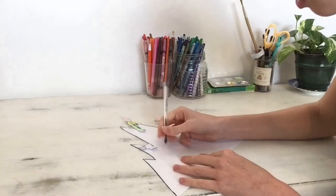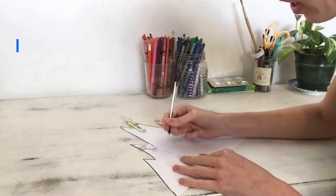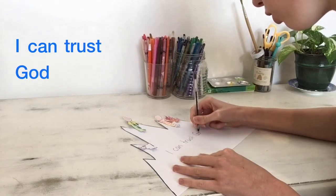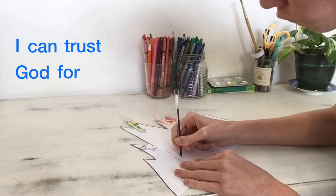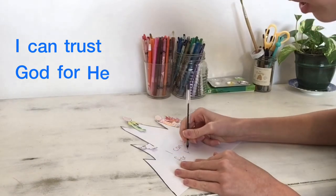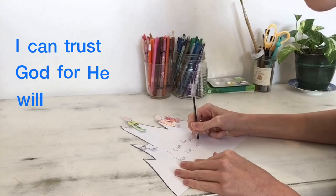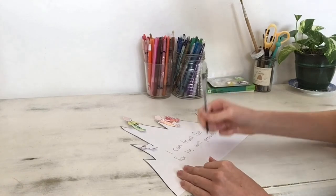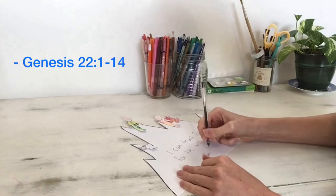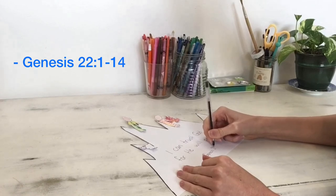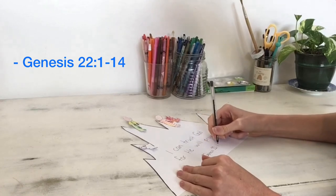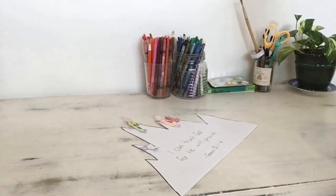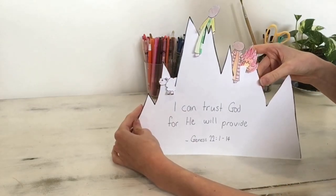So now we're going to write 'I can trust God for he will provide' and then I'm going to do a dash and write Genesis 22 verses 1 to 14 so that I remember the story. And there we go, there's our craft.